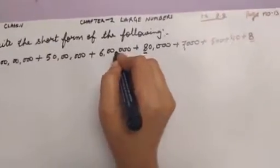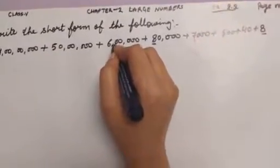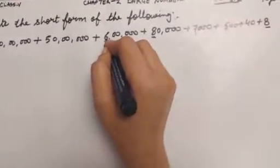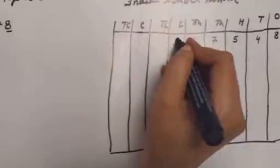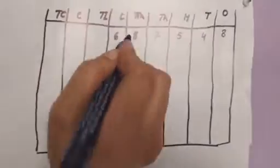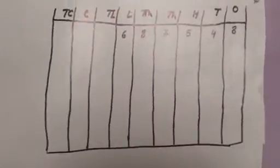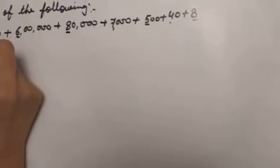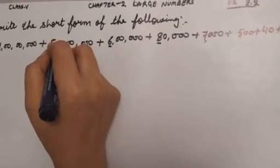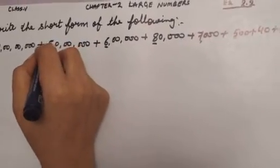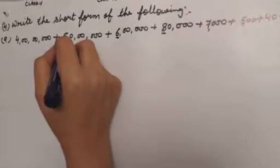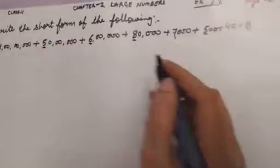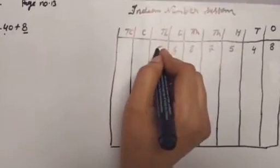Now — ones, tens, hundred, thousand, ten thousand, lakh, ten lakh — so we will write five in ten lakh column.